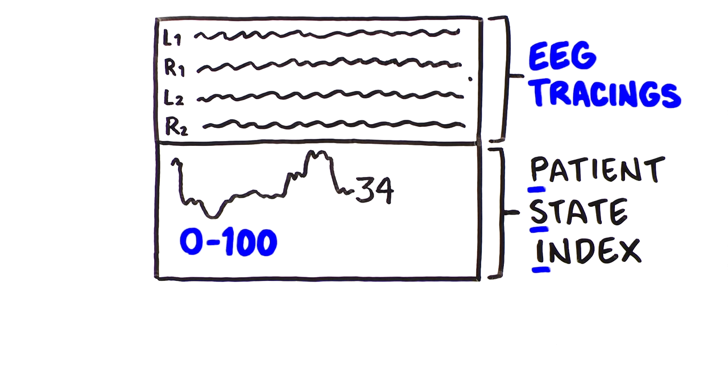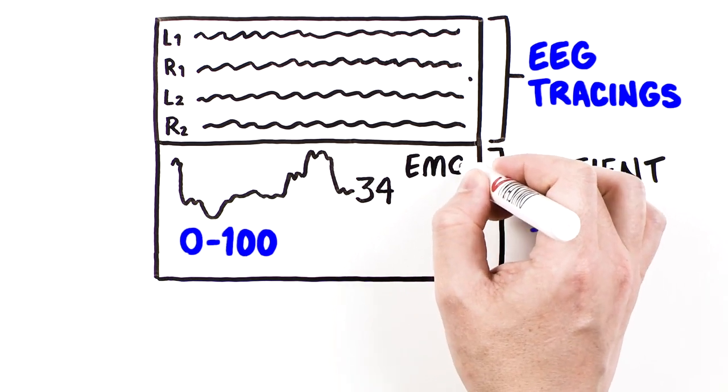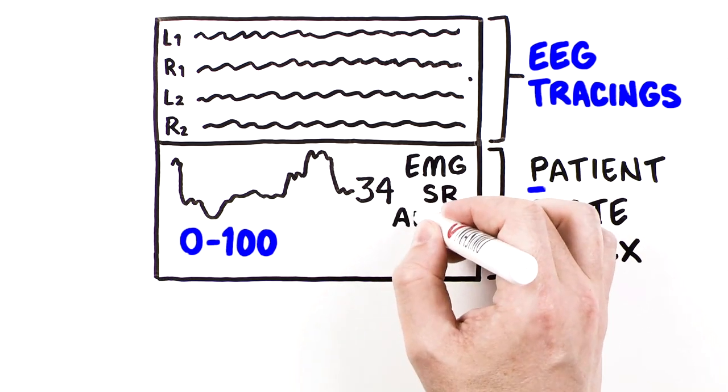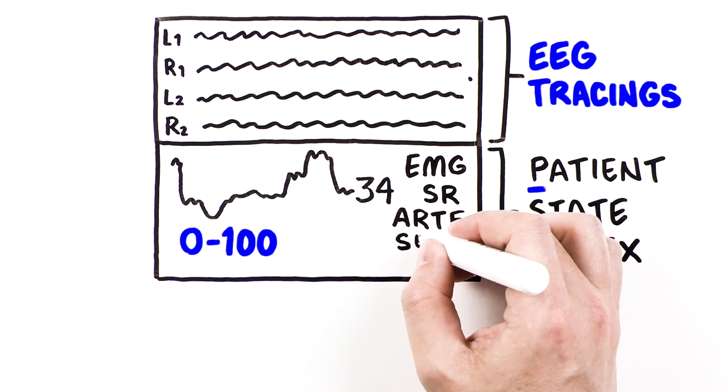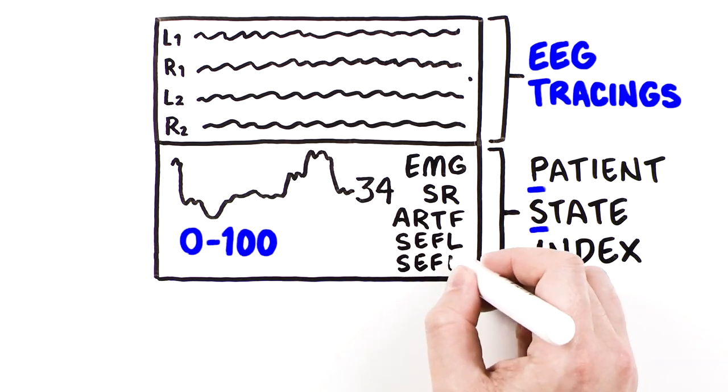The PSI is trended over time alongside other parameters, including electromyography, suppression ratio, artifact, and spectral edge frequency for both the left and right EEG.